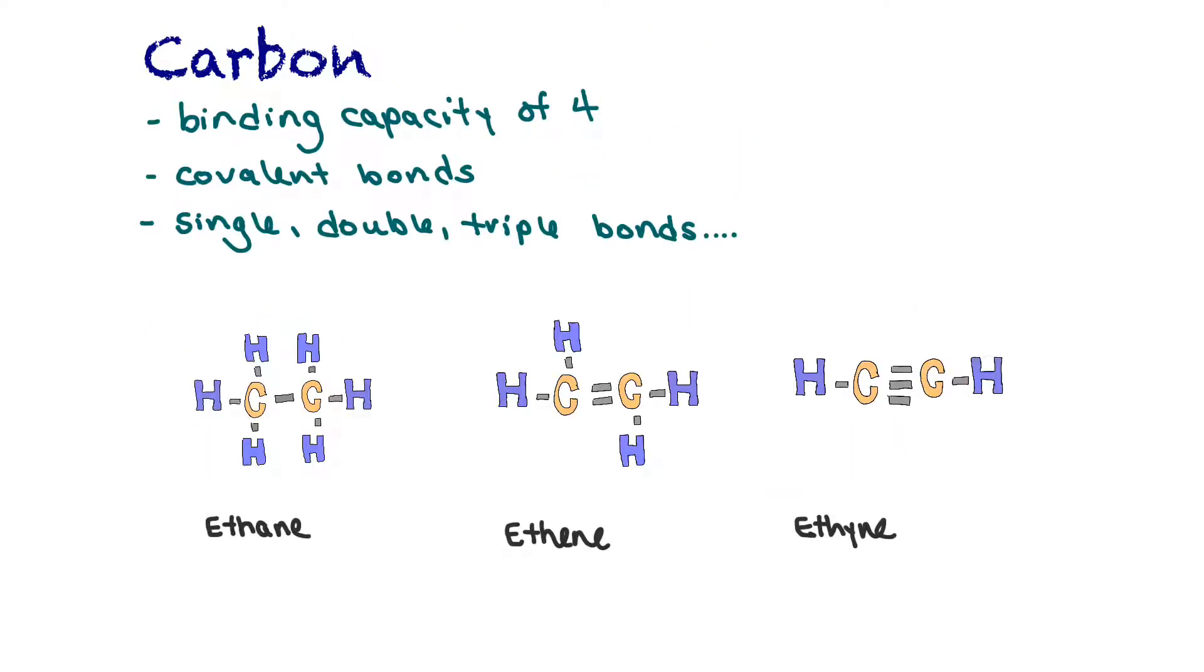Carbon is very important in terms of organic compounds because it forms the backbone of all biochemical molecules. Carbon is special because it has a binding capacity of four, meaning it has four electrons in its valence shell. It needs to gain four or share four electrons. It forms covalent bonds because it's wanting to share electrons with other atoms. Carbon is special because it can have a single, a double, or a triple bond.